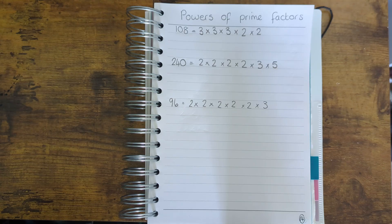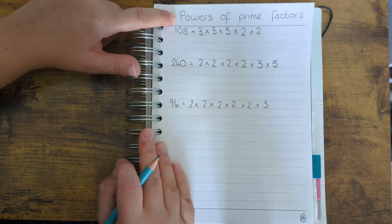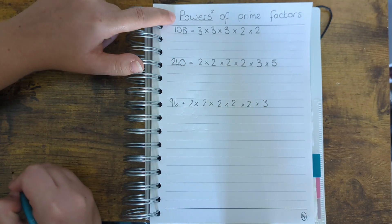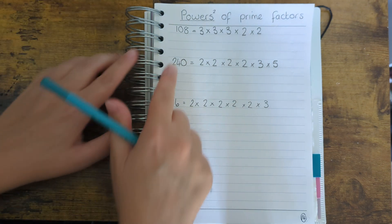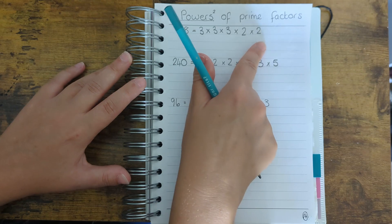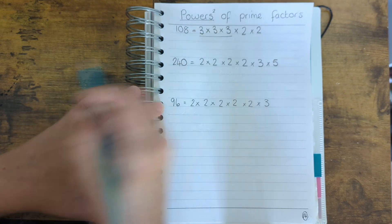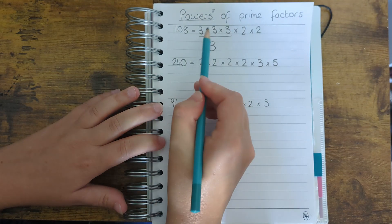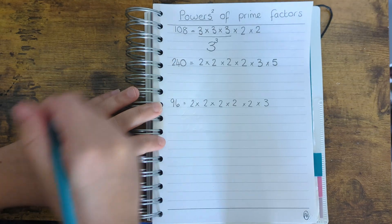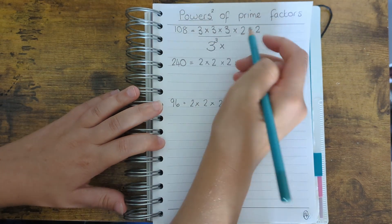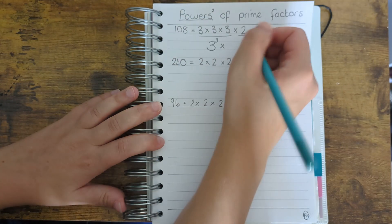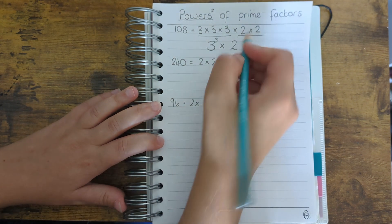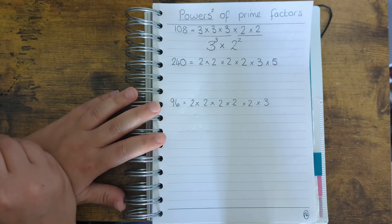Finally, sometimes you'll be asked to write the answer using powers of prime factors — the little numbers that float above a number, like a square or a cube. Looking at our previous example of 108, we've got three 3s and two 2s. For the 3s, I write the number 3 and then put a little 3 above it, because 3 times 3 times 3 is cubing, which is 3 to the power of 3. Then for the 2s, I write 2 and put a little floating 2, because 2 times 2 is the same as 2 squared.